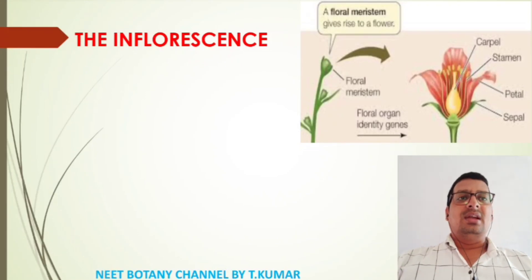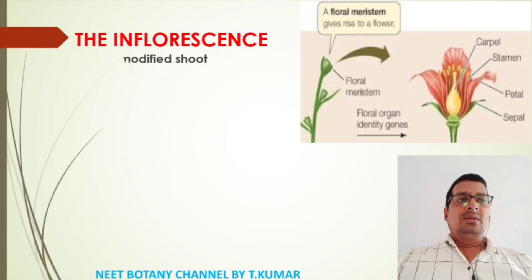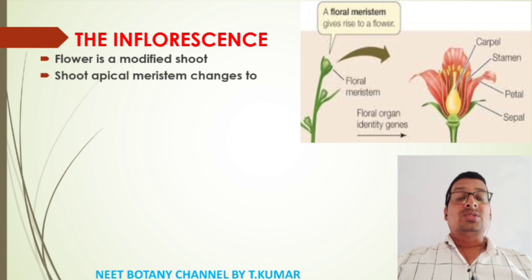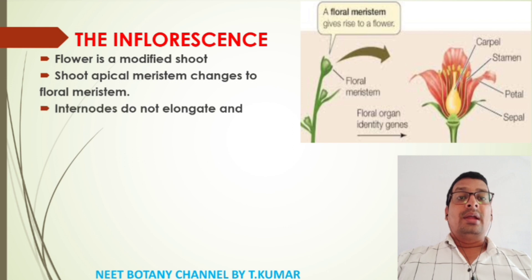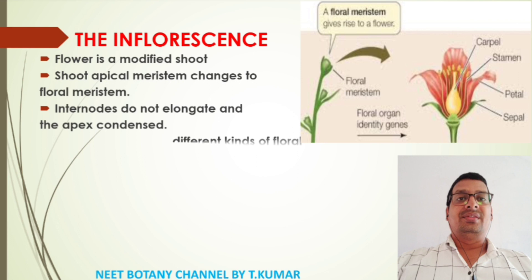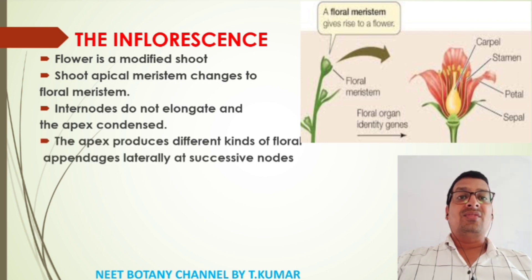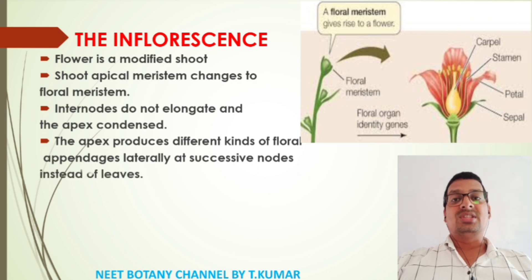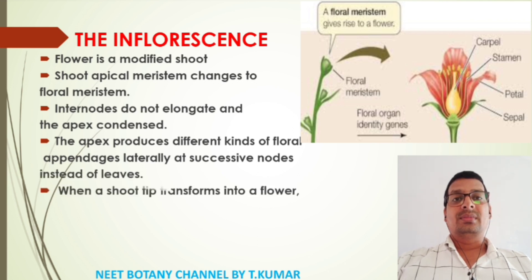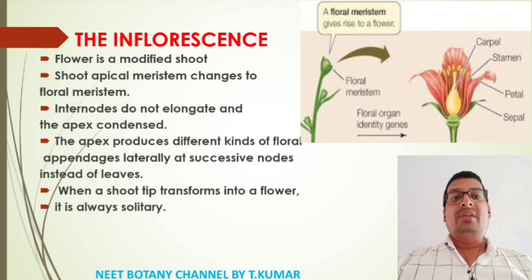Our topic is inflorescence and the flower. The flower is a modified shoot. A shoot apical meristem changes to floral meristem, and the internodes do not elongate and the apex condenses. The apex produces different kinds of floral appendages laterally at successive nodes instead of leaves. When a shoot tip transforms into a flower, it is always solitary.